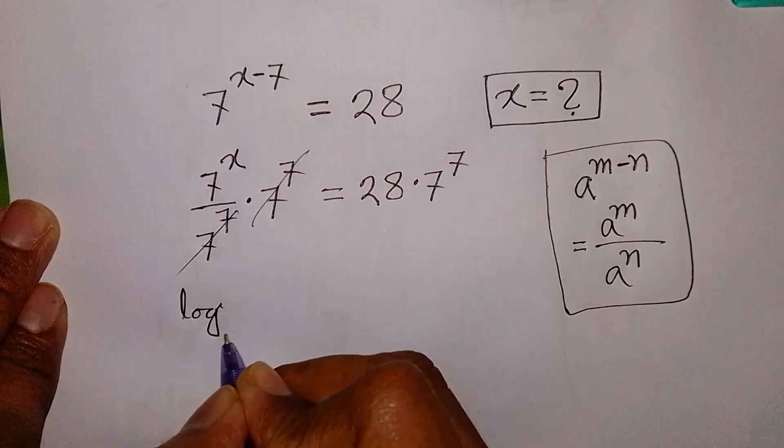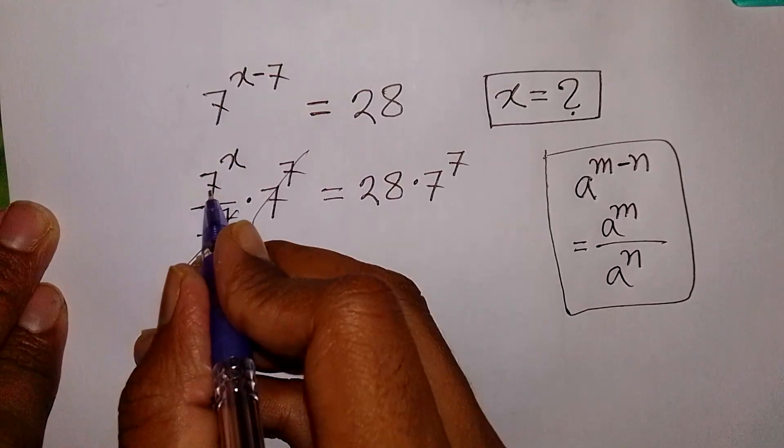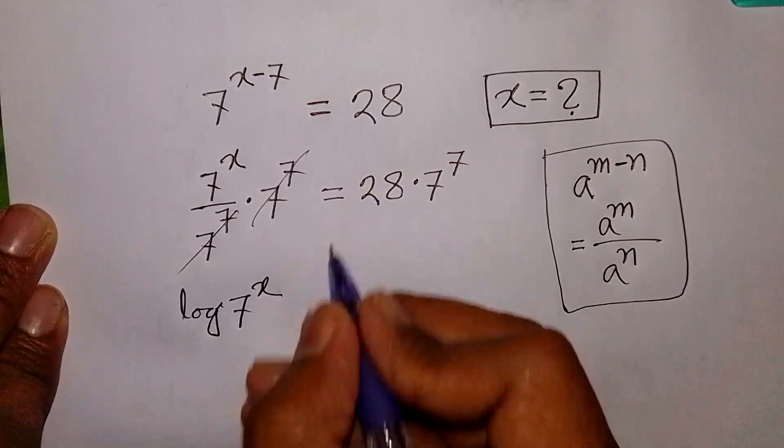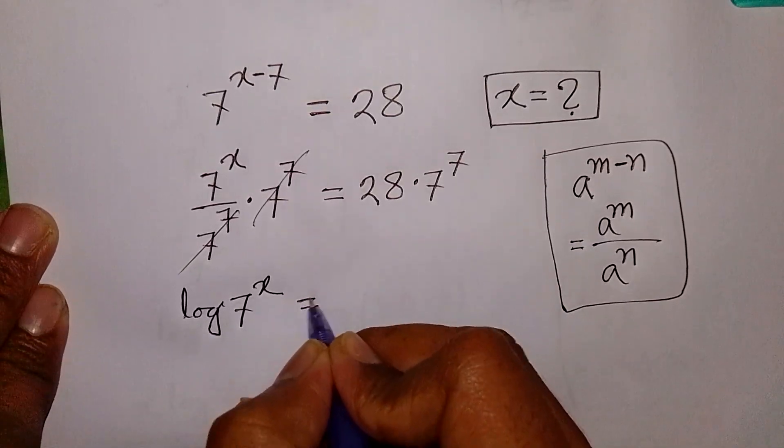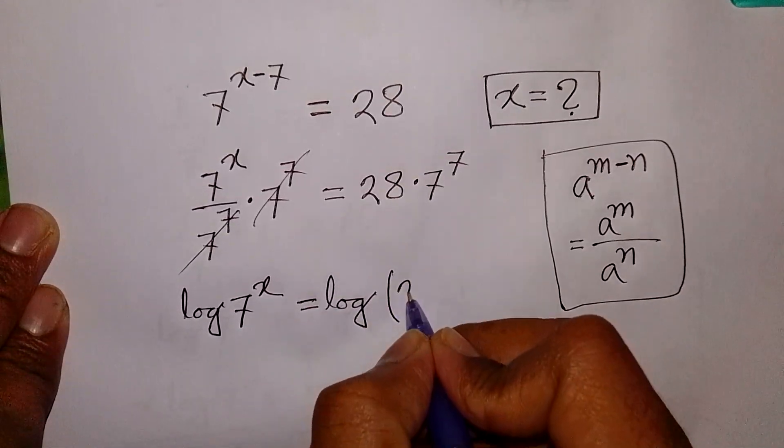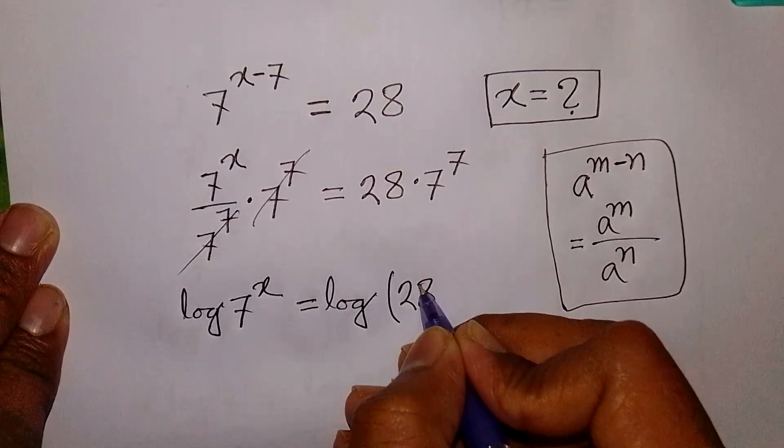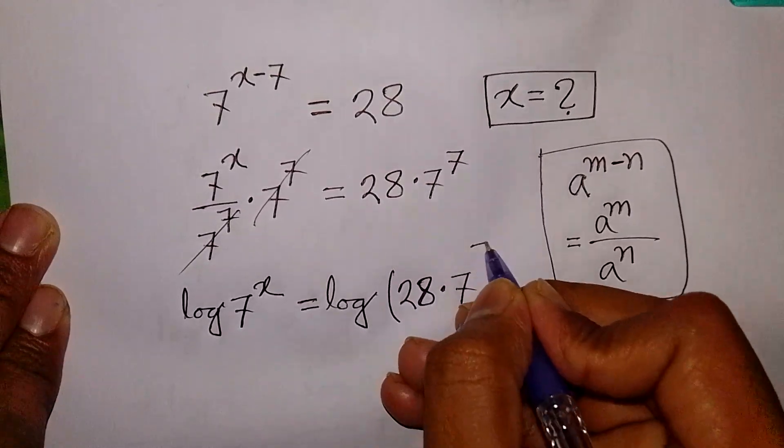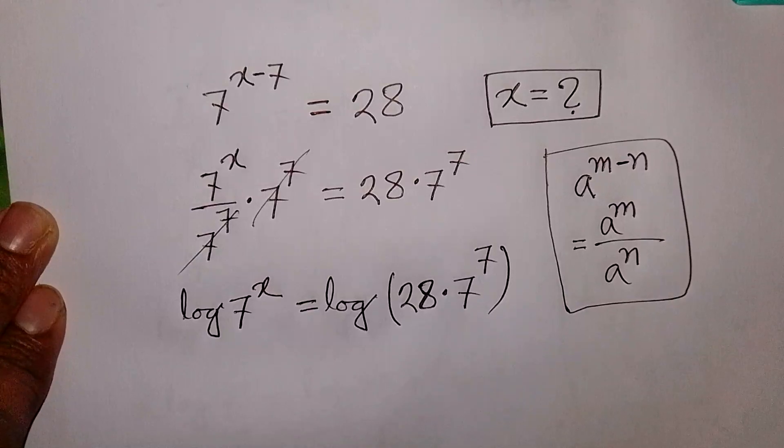Next step, we take log in both sides. Log of 7 power x is equal to log of 28 times 7 power 7.